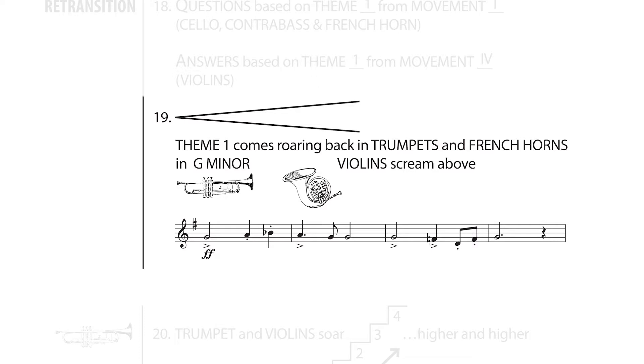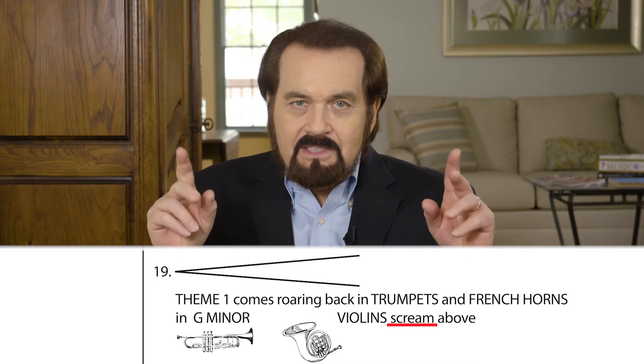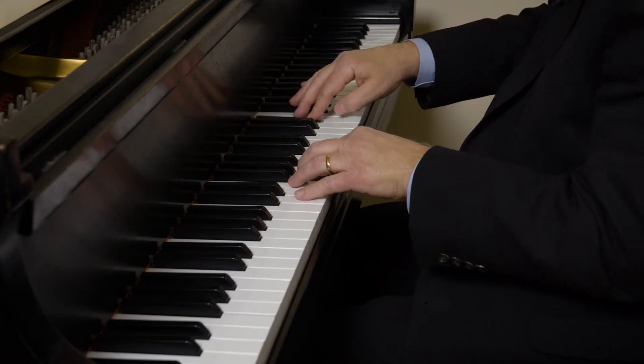At number 19, we have another powerful crescendo, followed by a return of Movement 4 Theme 1 in all its glory. We've used the word 'scream' several times in these listening guides—it's just the only word to describe a moment when the music seems so intense. What are the violins screaming above the trumpets and horns? They're just playing a descending scale, but it's so high in the violin register and played against Theme 1 in the trumpets and horns. Listen again and focus on the 30 violins, especially the first violins playing up in the stratosphere.